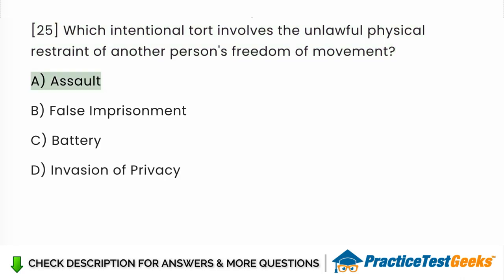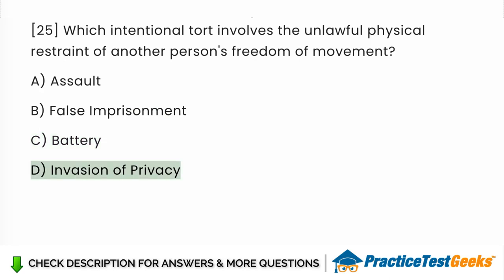Which intentional tort involves the unlawful physical restraint of another person's freedom of movement? a. Assault. b. False imprisonment. c. Battery. d. Invasion of privacy.